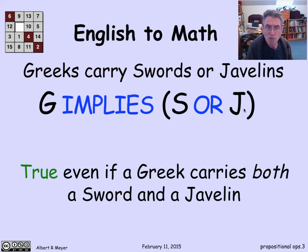The problem is, what does or mean? It turns out that for javelins and swords, it's true even if a Greek carries both a sword and a javelin. This is an inclusive or.